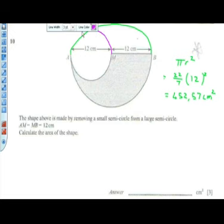Then we go to the smaller circle. Okay. We calculate the area of the smaller circle. What is the radius of the smaller circle?